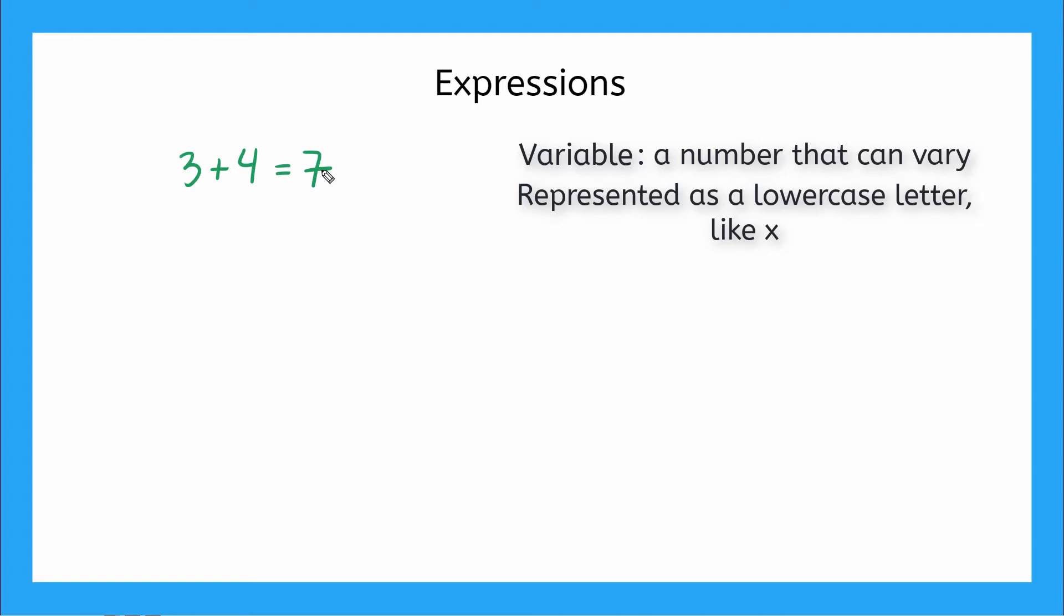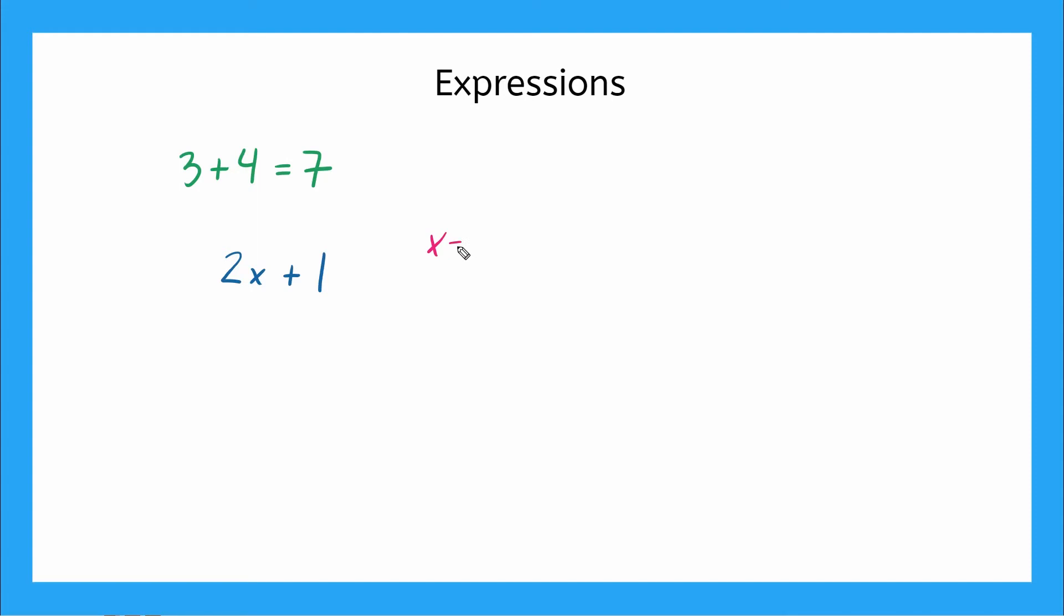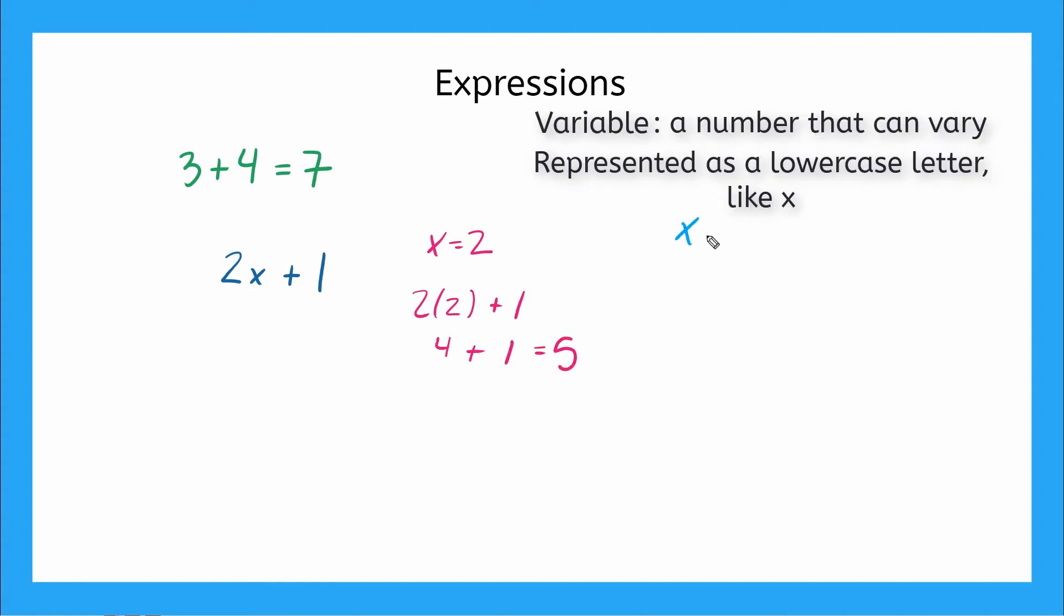So we could have an expression with a variable that looks like 2x plus 1. And if we want to evaluate this expression, we need to know some given values for x. So what if we're told that x is equal to 2? We could evaluate this by using substitution. We plug in the given value of 2 wherever we see x. So we would get 2 times 2 plus 1. Order of operations, we multiply first, we get 4 plus 1, and that would give us 5.